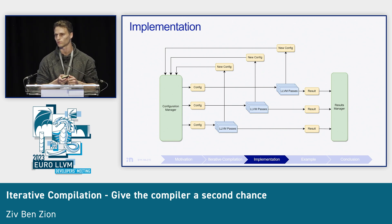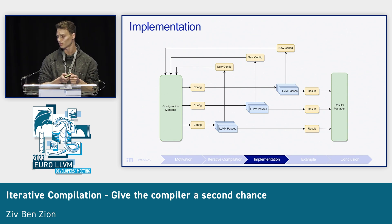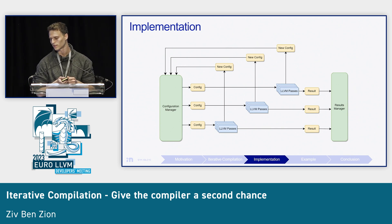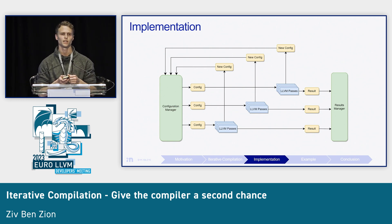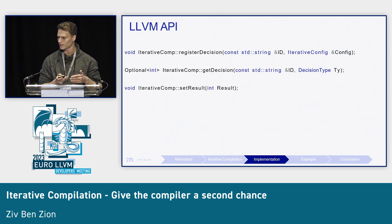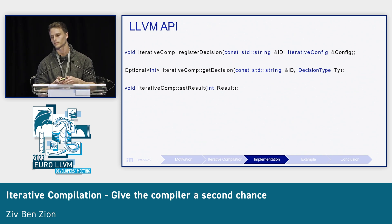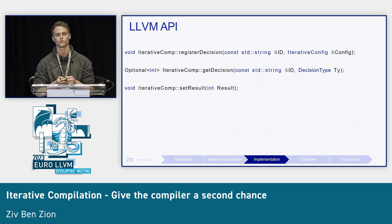This allows the compiler to actually revisit some of its decisions. It should also send the result of the final generated code to the results manager, which will assign a score per configuration. A configuration in this case is simply a file describing the list of all non-default decisions. The API is pretty straightforward: a pass can register a new decision, a pass can get a specific decision from the current configuration, and finally it can set the result for the current configuration.